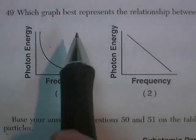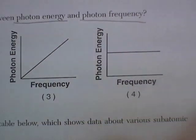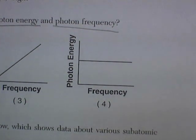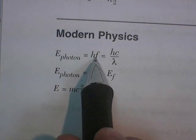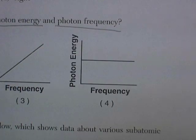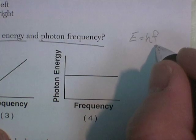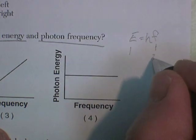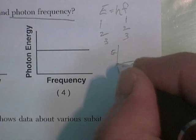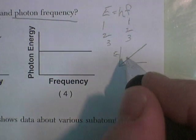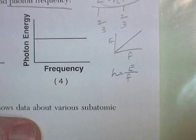Question 49. Which graph best represents the relationship between photon energy and photon frequency? Graphs are just division problems, so let's find a formula. We're into modern physics. The energy of a photon is equal to hf — Planck's constant times the frequency. So energy equals hf. If F is 1, energy is 1. If F is 2, energy is 2. If F is 3, energy is 3. So if we graph energy versus frequency, it would be a direct relationship, the slope of which would be Planck's constant, because energy divided by frequency equals Planck's constant from that formula.